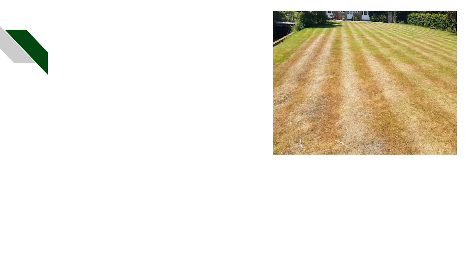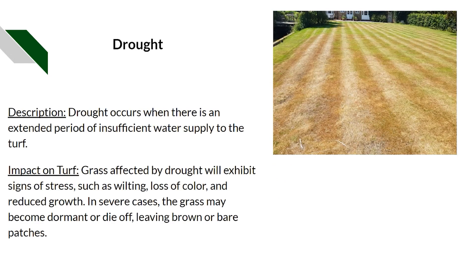What is this turf disorder? Drought. Drought occurs when there is an extended period of insufficient water supply to the turf. This also does not mean that the turf is hydrophobic — in rainfall, the soil may still absorb water.